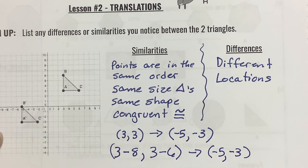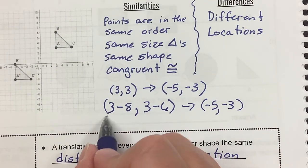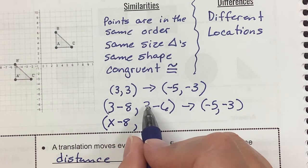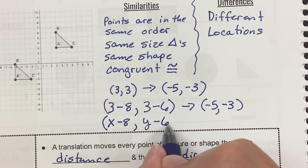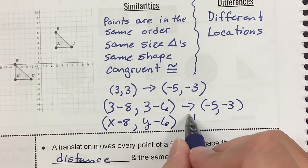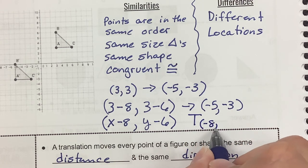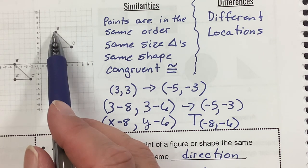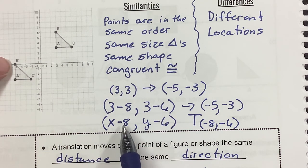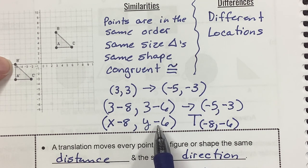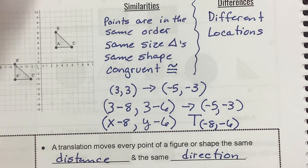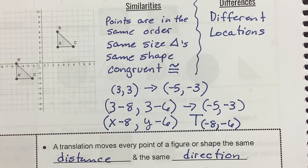So that gives me a transformation of negative 8, comma, negative 6 — because I moved 8 to the left and then 6 down. And if I do that to B, which is at (3, 6): 3 minus 8 is negative 5, and 6 minus 6 is 0. So B prime is right at (negative 5, 0). I could take any of the coordinates on A prime, B prime, C prime and A, B, C to figure this out.